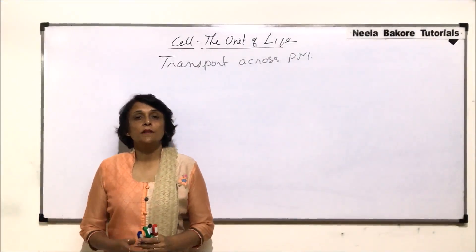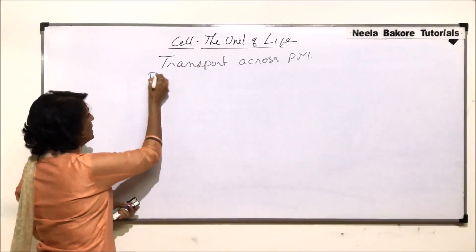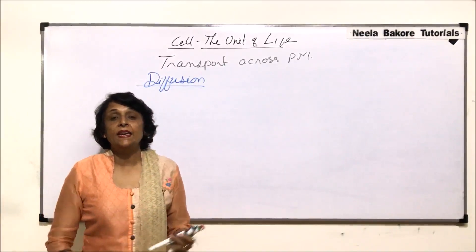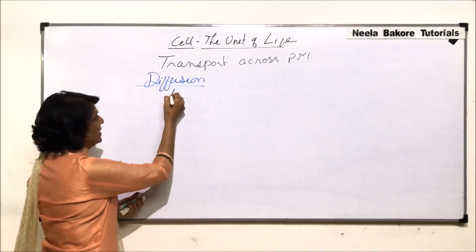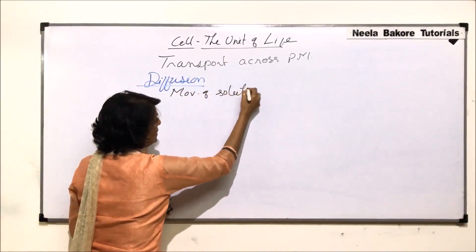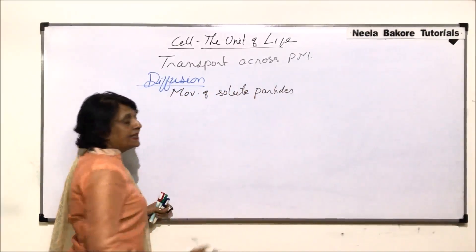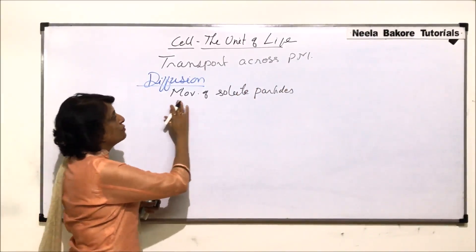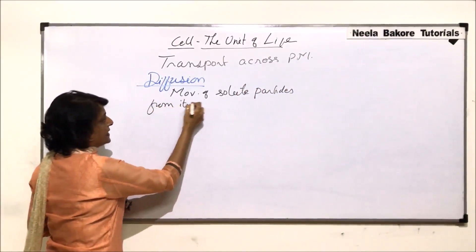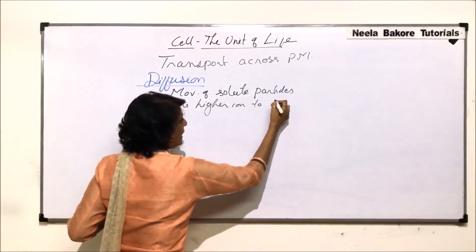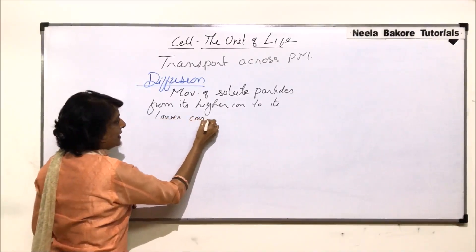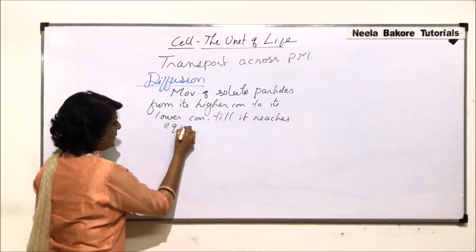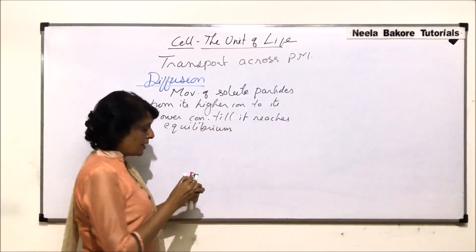In this video we will talk about the second method of passive transport, that is diffusion. The definition of diffusion is the movement of solute particles — these solute particles can be solid, liquid, or gaseous, they can be in any state — from higher concentration to lower concentration till it reaches equilibrium.